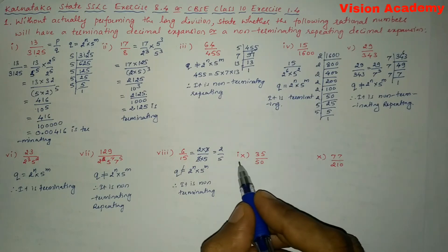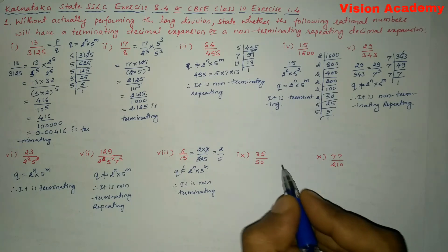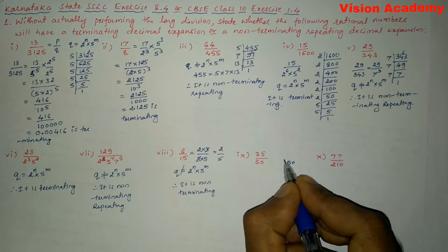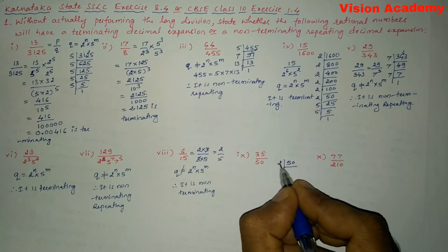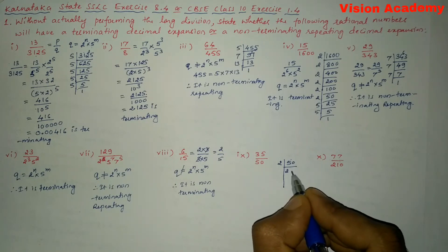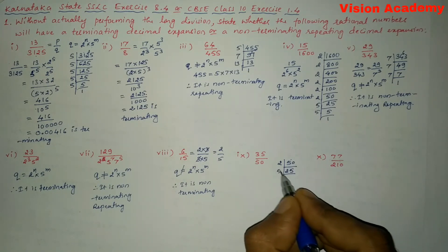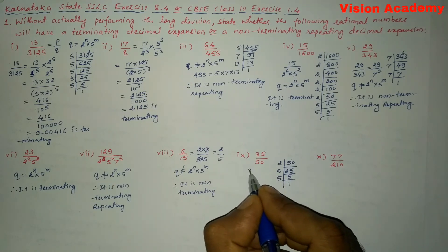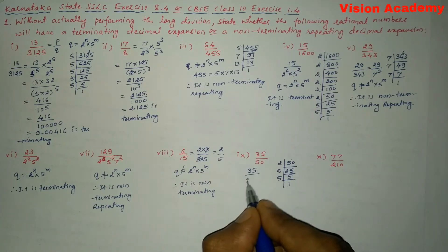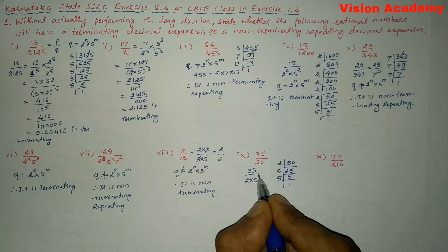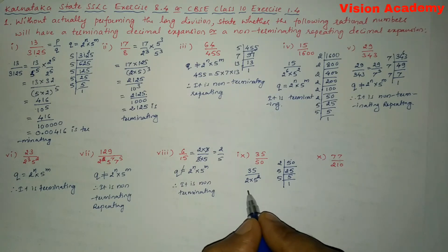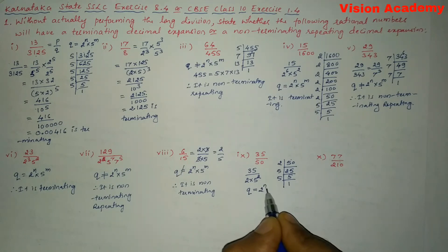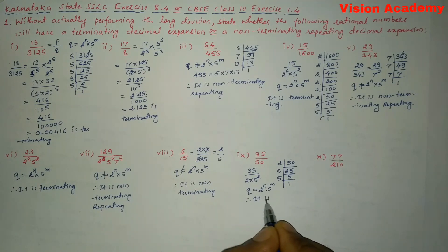Roman number nine: 35 by 50. Dividing 50 by 2 gives 25, and 25 by 5 gives 5, and 5 by 5 gives 1. So 50 = 2 into 5 to the power 2. Since the denominator Q is in the form 2 to the power n into 5 to the power m, it is terminating.